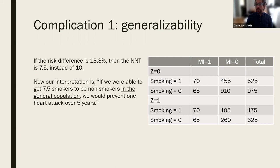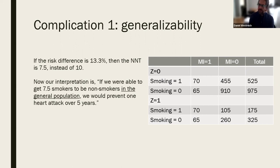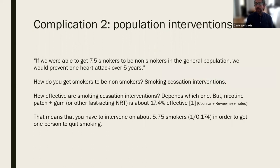Now our interpretation has changed: if we are able to get 7.5 smokers to be non-smokers in the general population, we would expect to prevent one heart attack over five years. This first complication points out that what you estimated in your study sample does not necessarily equal the number needed to treat or risk difference you should carry into a cost-effectiveness model.